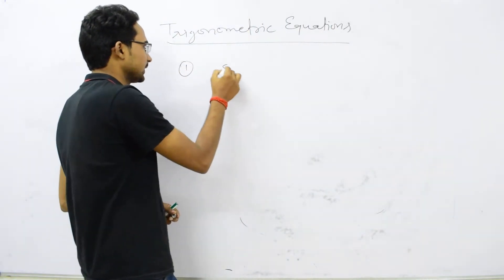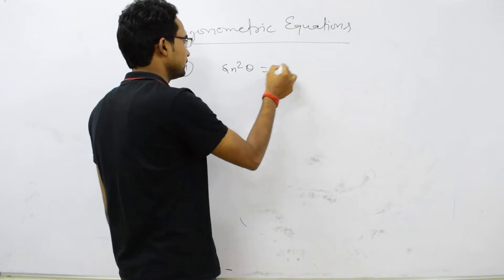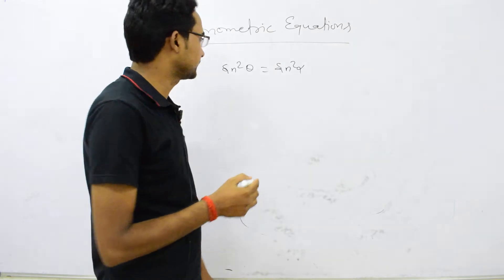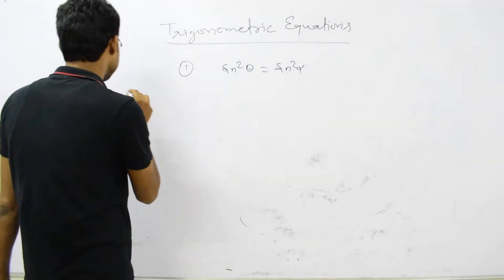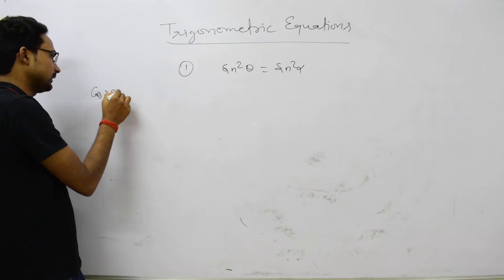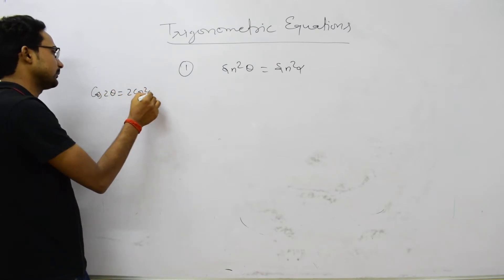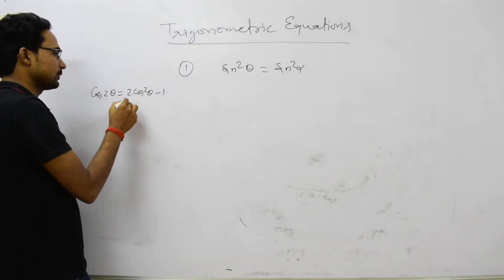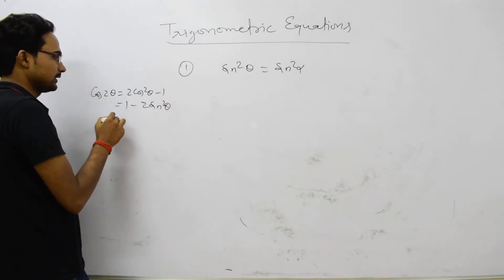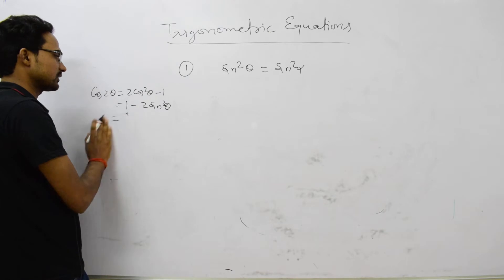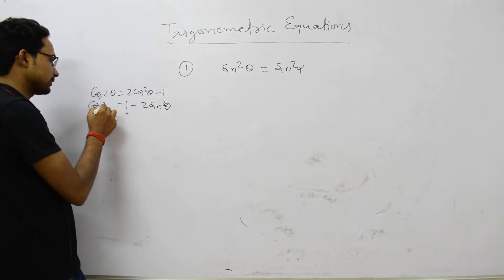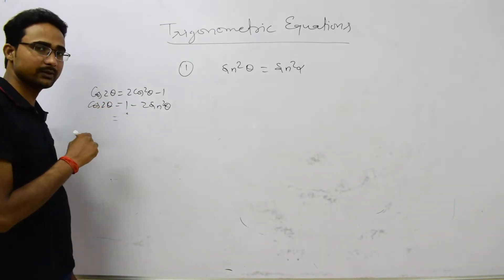First case: sin²θ = sin²α. How can we find the general solution? We know the formula cos 2θ = 1 − 2 sin²θ, so we can write cos 2θ = 1 − 2 sin²θ.